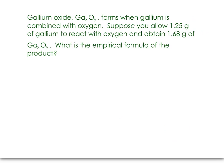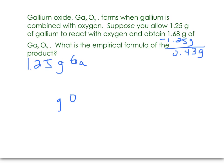Finally, gallium oxide, GaxOy, forms when gallium is combined with oxygen. Suppose you allow 1.25 grams of gallium to react with oxygen and obtain 1.68 grams of gallium oxide. What is the empirical formula of the product? Here we don't have percents — we have masses. We have 1.25 grams of gallium, and we also need the grams of oxygen. It's not 1.68 grams, because that is the mass of the compound. If we subtract off the mass of the gallium, that will give us the mass of the oxygen in the compound.